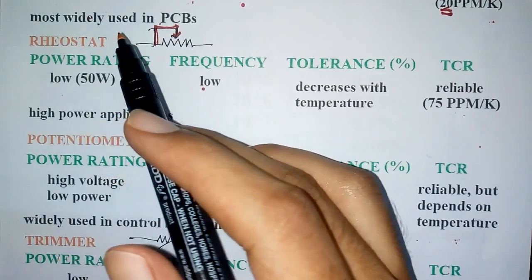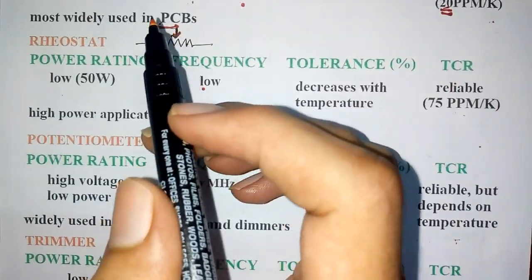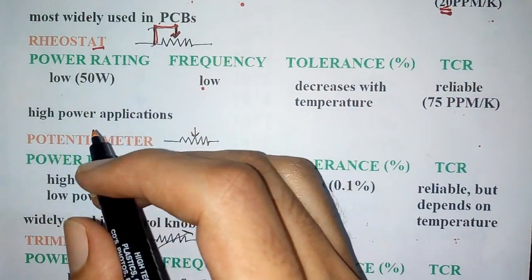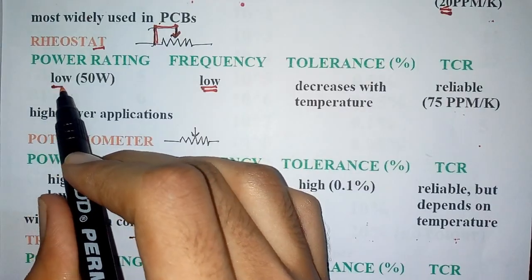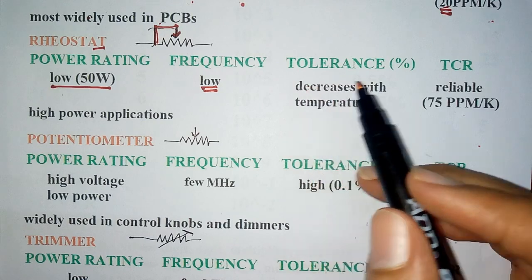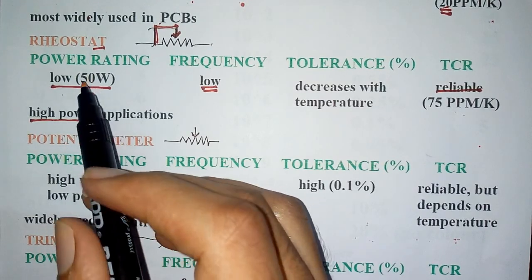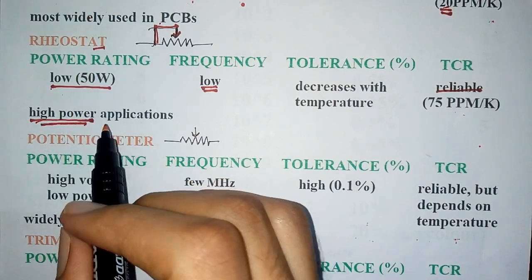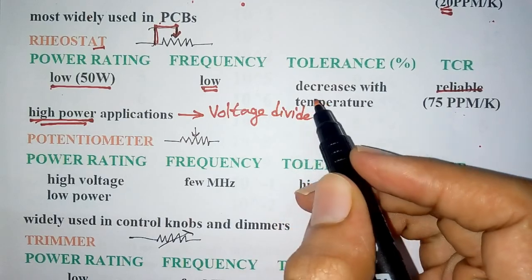Let's look at the variable resistors: rheostat, potentiometer and trimmer. This is the symbol of rheostat. It is a variable wire wound resistor, which means its properties are similar to a wire wound resistor. Its frequency of operation is low and power rating is up to 50 watts. Its tolerance decreases with temperature, similar to wire wound resistors. It has a slightly reliable TCR value and is used in high power applications, generally as a voltage divider.